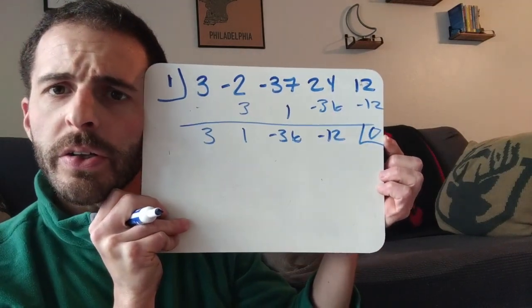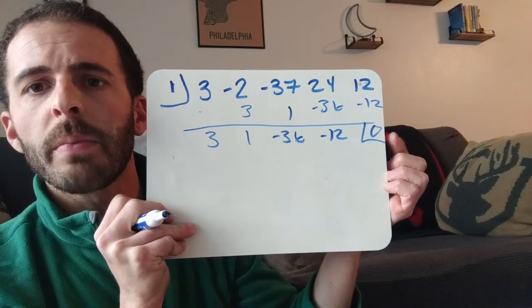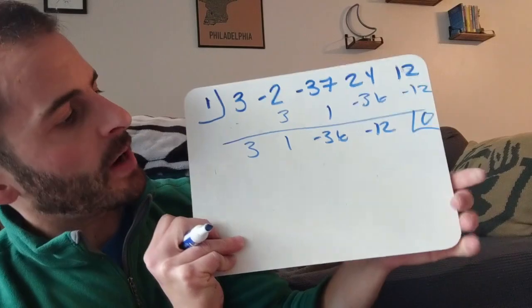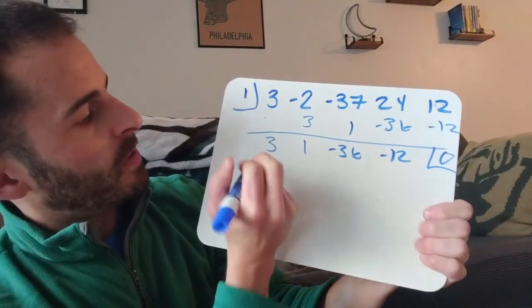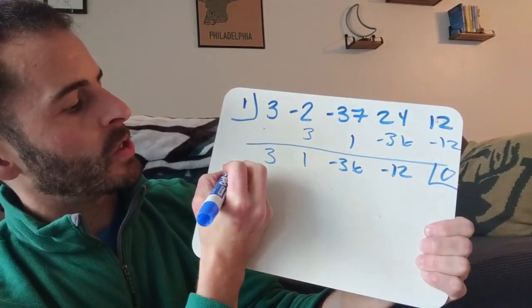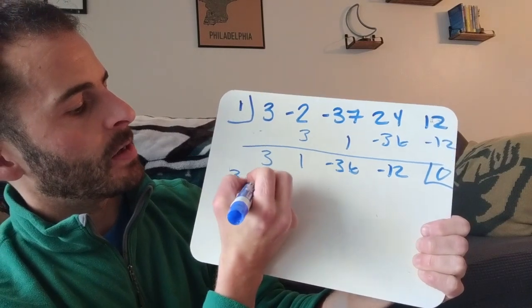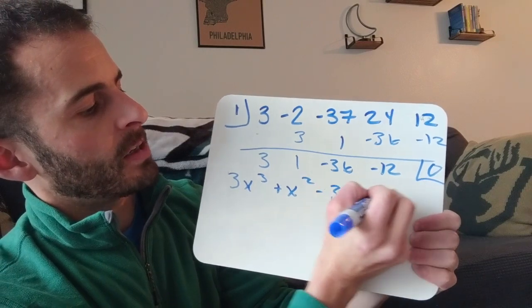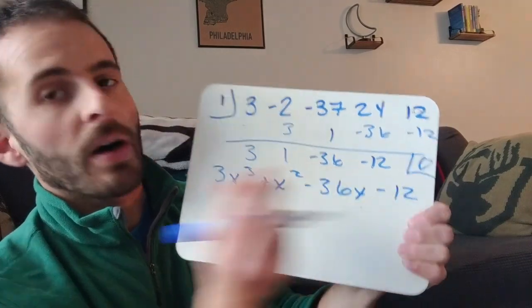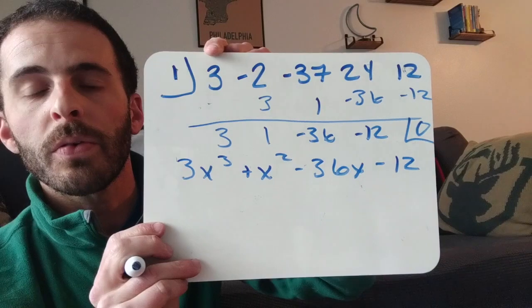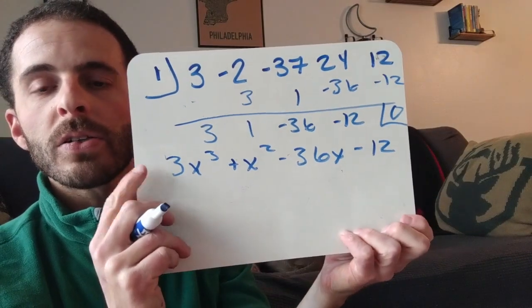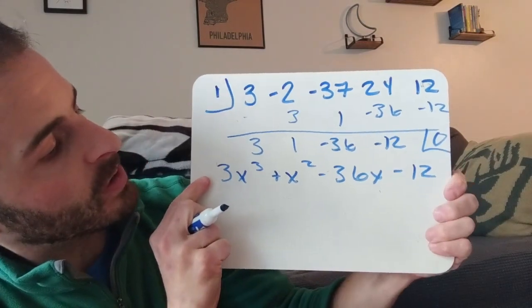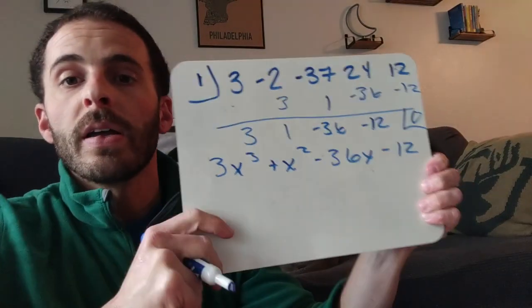We might have actually skipped the remainder theorem in the earlier sections. When 0 is our remainder, that means that this number is definitely a solution. Alright, so now I have, this was 3x to the fourth, I have an equation that says 3x cubed plus x squared minus 36x minus 12. Remember that when I start with 3x to the fourth and I use synthetic division, my answer is going to have an exponent that's 1 less. So 3x cubed plus x squared minus 36x minus 12.